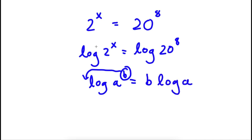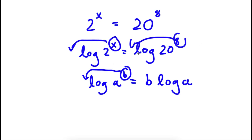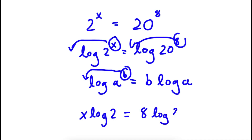So in this case, for both log 2 to the power of x and log 20 to the power of 8, I'm going to be using this property. So for log 2 to the power of x, I'm going to move the x to the front, and for log 20 to the power of 8, I'm going to move the 8 to the front. So now I have x times log 2 is equal to 8 times log 20.